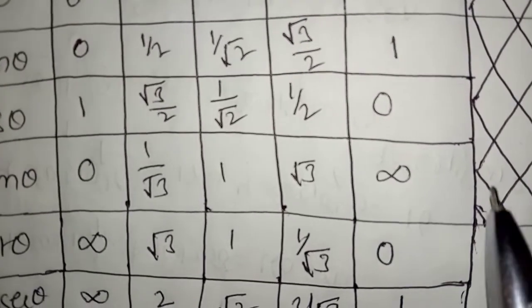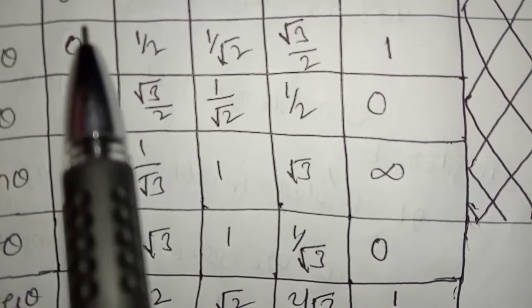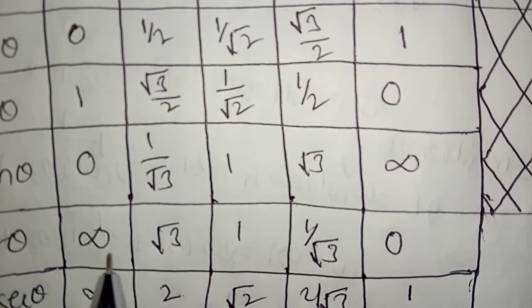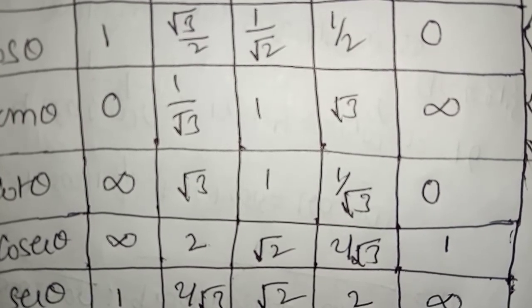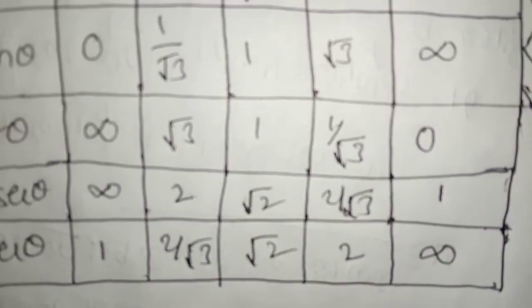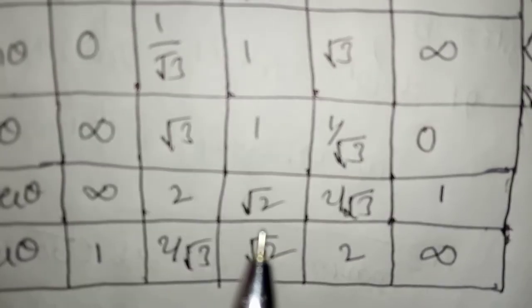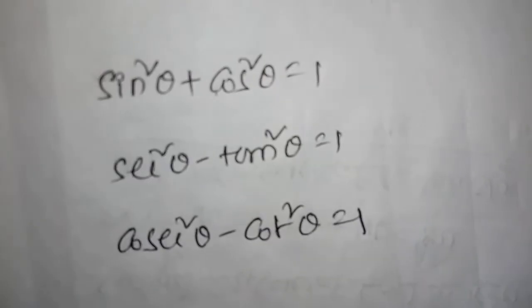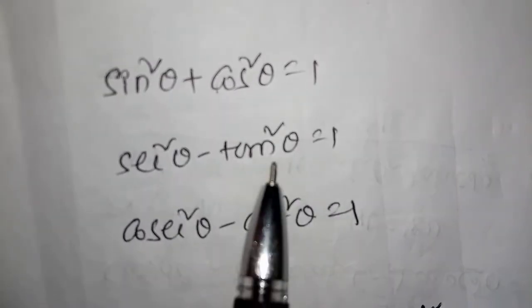Now let's look at our values. We will solve sin theta values. 1 by cos theta — referring to the table form. Sin squared theta plus cos squared theta is equal to 1.